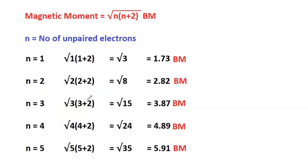As you know, the equation for magnetic moment is square root of n into n plus 2, where n is the number of unpaired electrons, and the magnetic moment will be in units of Bohr magneton.